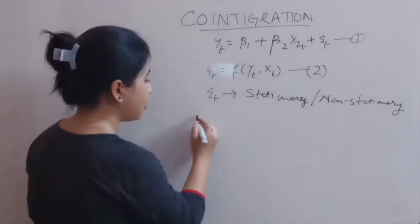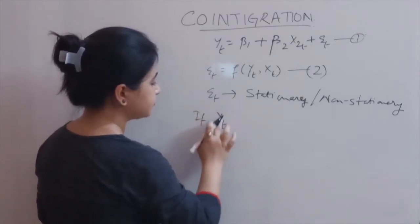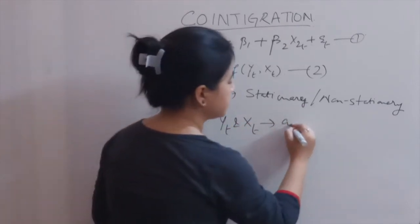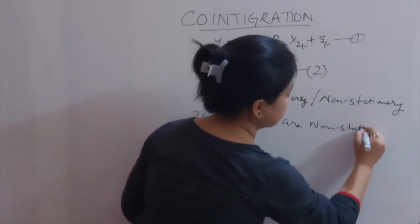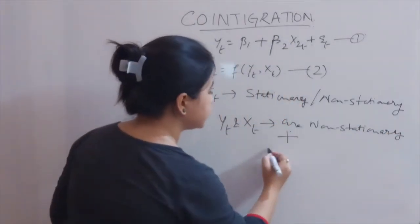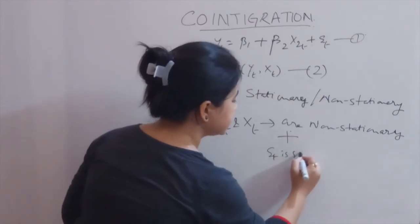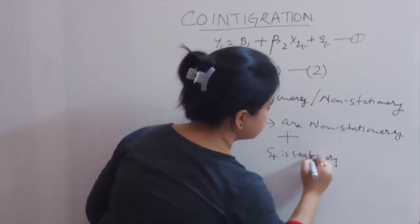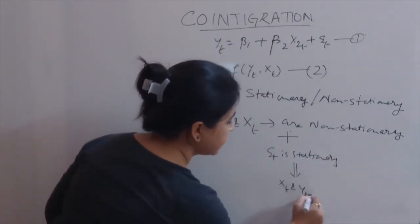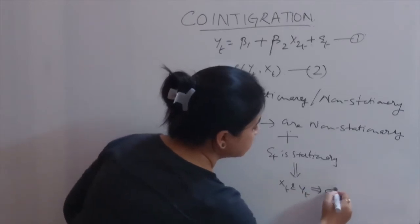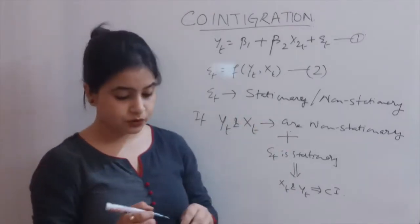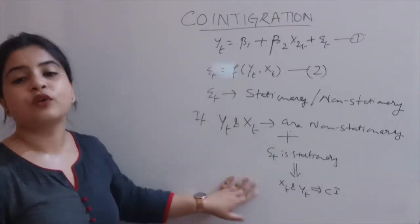Formally, if yt and xt are non-stationary but εt is stationary, then we can say that yt and xt are co-integrated — denoted CI for short. This is the basic definition of co-integration.